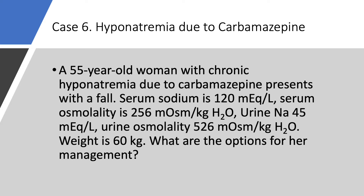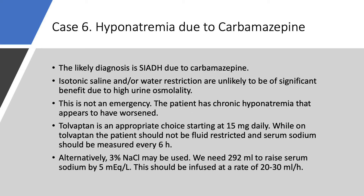The patient is basically asymptomatic except for the fall. The likely diagnosis is SIADH — hyposmolar hyponatremia with high urine sodium and high urine osmolality. Are we going to give isotonic saline or just do water restriction? No. When urine osmolality is above 500, water restriction alone is unlikely to work. You can and should do fluid/water restriction, but that in and of itself is not enough. This is not an emergency. Tolvaptan is a very appropriate option and works really well for SIADH. You have to start it in the hospital at 15 mg per day.